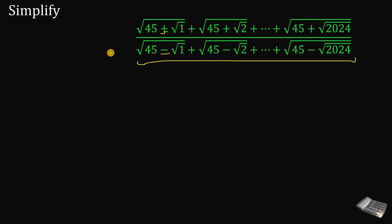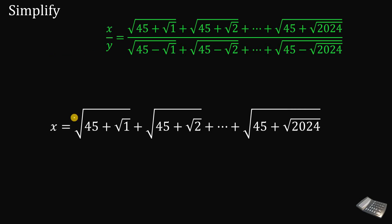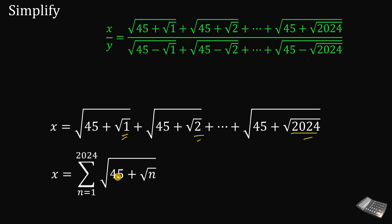Our solution to this question is to let the numerator and denominator be x and y. For the numerator x, we have square root of 45 plus square root of 1, plus square root of 45 plus square root of 2, all the way down to square root of 45 plus square root of 2024. The only thing that changes is the number inside the second square root, going from 1 to 2024. So we can rewrite x using summation notation: x equals the summation of square root of 45 plus square root of n, from n equals 1 up to 2024.